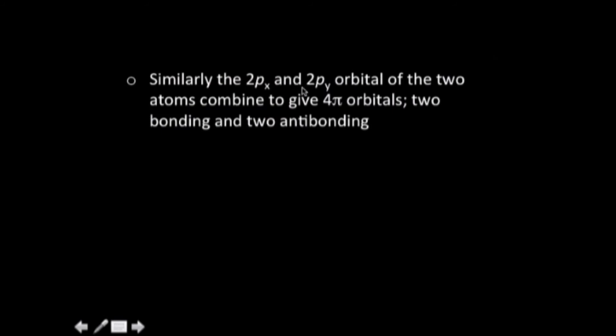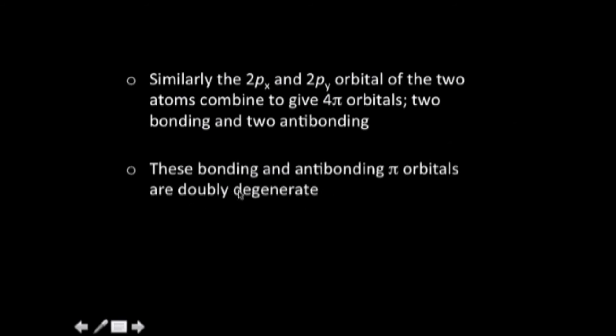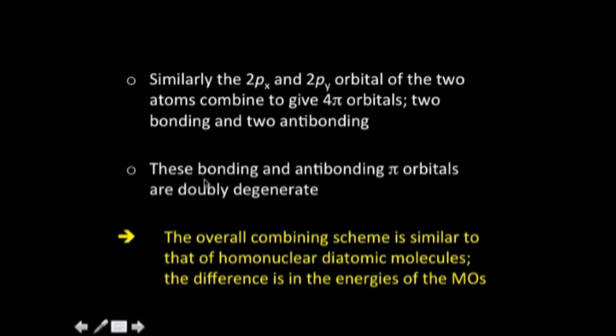The 2px and 2py orbitals of the two atoms combine to give four pi orbitals — two bonding and two antibonding — and the bonding and antibonding molecular orbitals are doubly degenerate. The overall combining scheme of nitrogen and oxygen is similar to what we had in case of homonuclear diatomic molecules; the only difference lies in the energies of the molecular orbitals and of the atomic orbitals as well. Let us see how this translates into a molecular orbital energy level diagram.